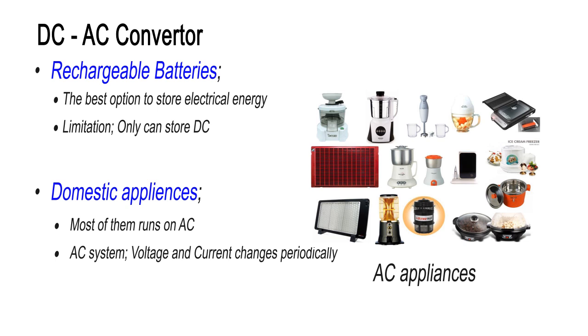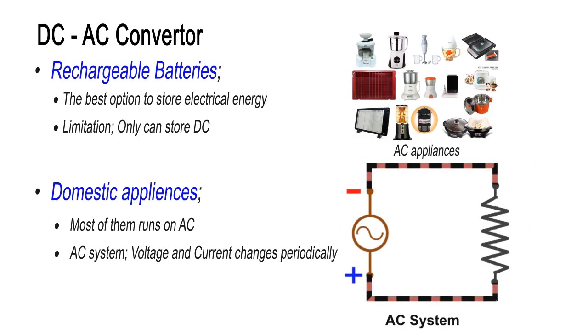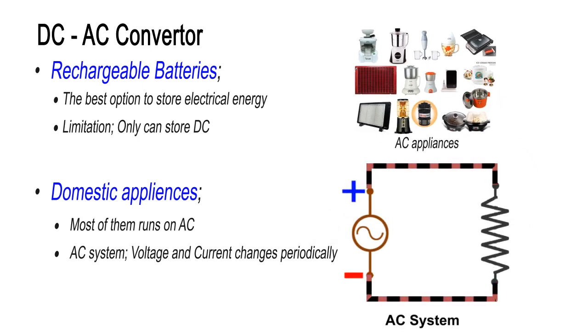But most of the equipment we use in our houses runs on AC. This is a format of electrical energy in which voltage and current vary in a periodic fashion.